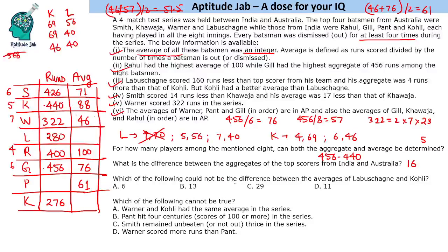The third question asks which value could not be the difference between the averages of Labuschen and Kohli. In the three possible cases, the differences are: 69 − 56 = 13, 69 − 40 = 29, and 46 − 40 = 6. So 6, 13, and 29 are all possible. Therefore, 11 cannot be a possible difference.